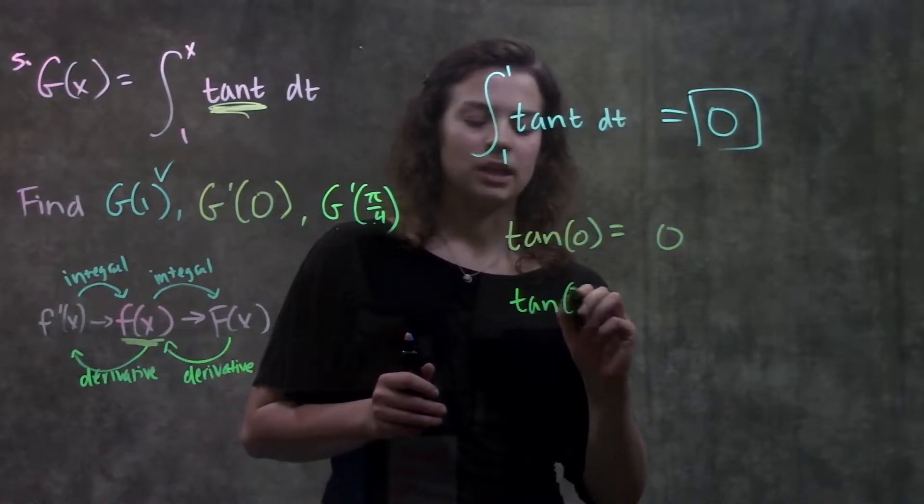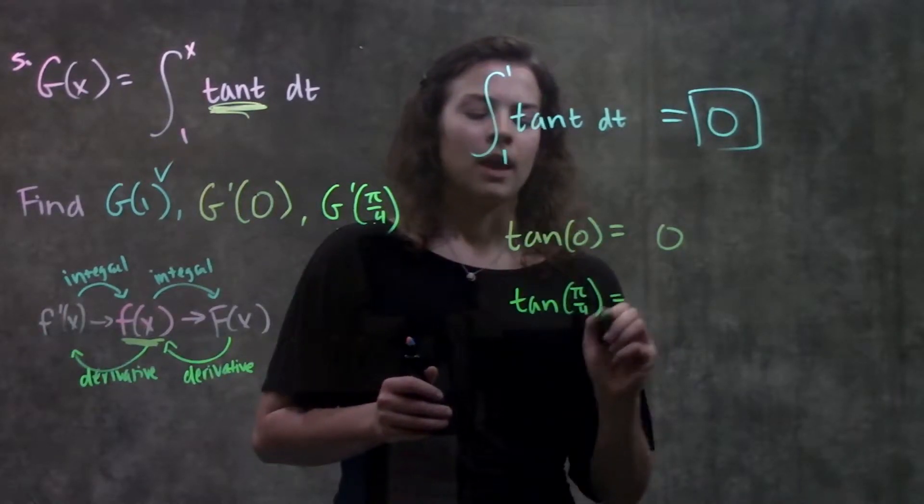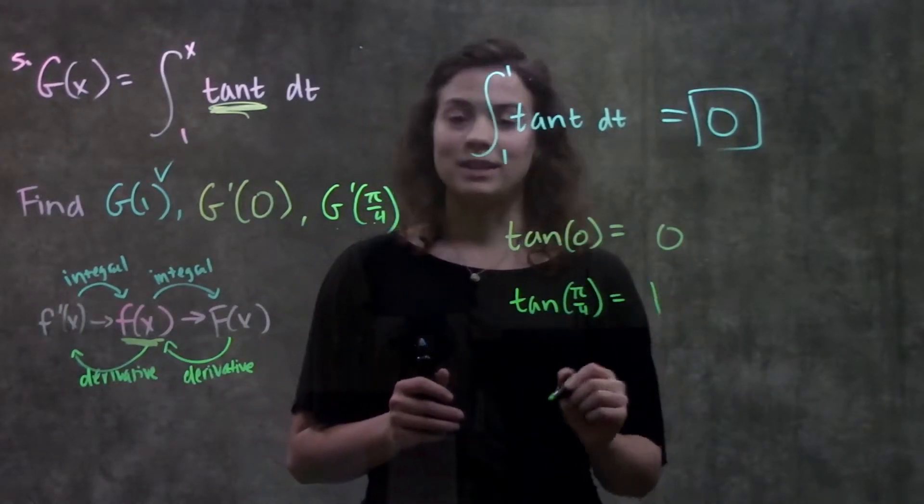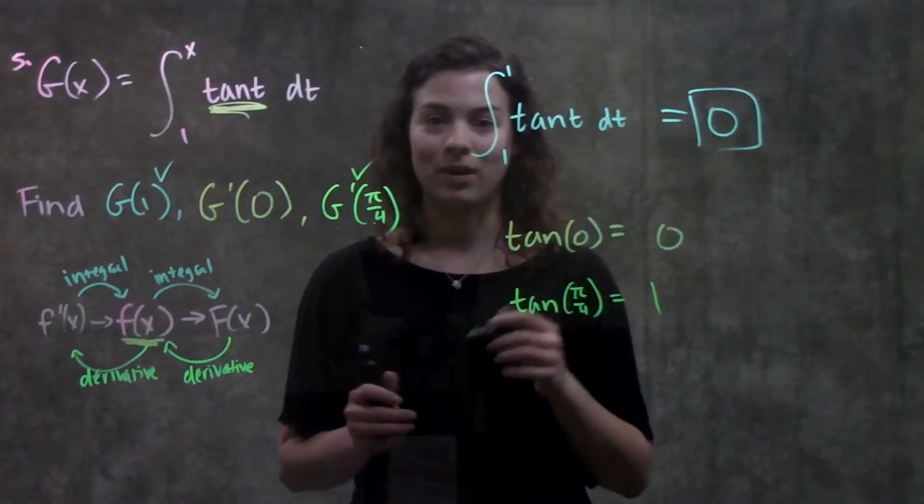So when I do that, I get tangent of pi over 4, and tangent of pi over 4 is just 1. And that's it for that problem.